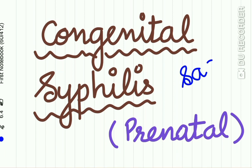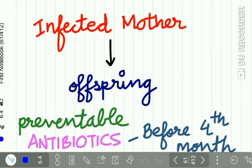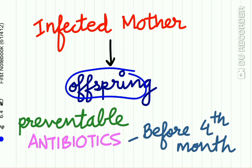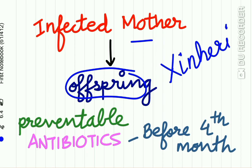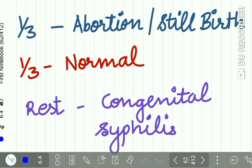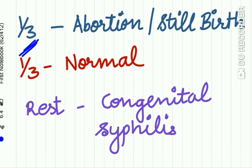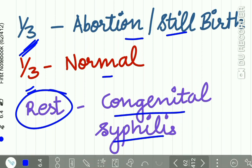Congenital syphilis is also called prenatal syphilis. It is transmitted to the offspring from the infected mother and is not inherited. It can be prevented with use of antibiotics in the 4th month of pregnancy; if antibiotics are used, 95% of offspring are free from the disease. If transmission does occur, one third of pregnancies lead to abortion or stillbirth, one third would be normal, and the rest would suffer from congenital syphilis.